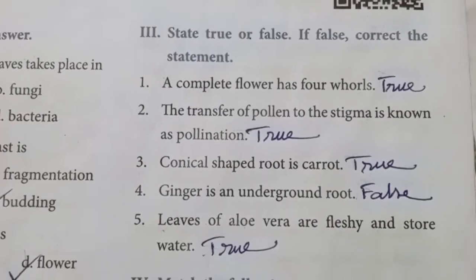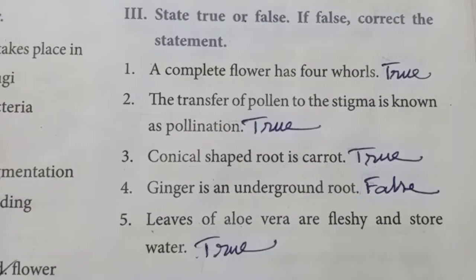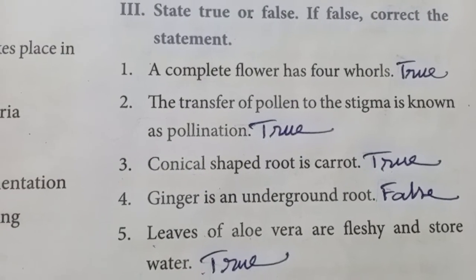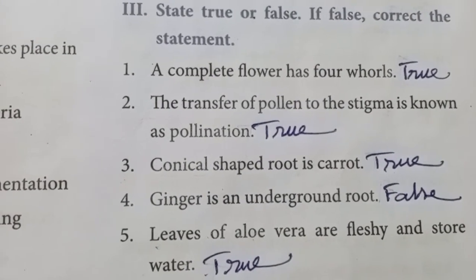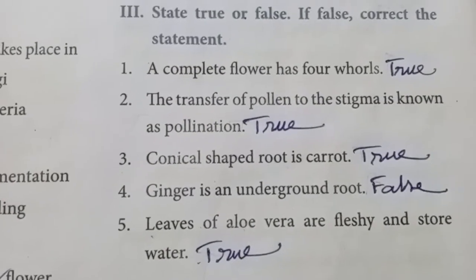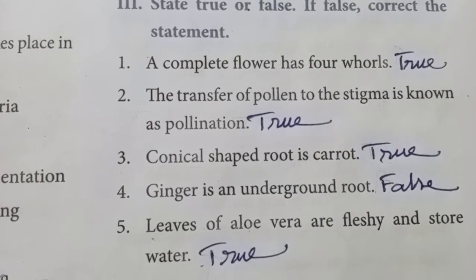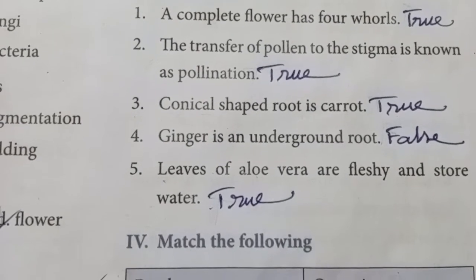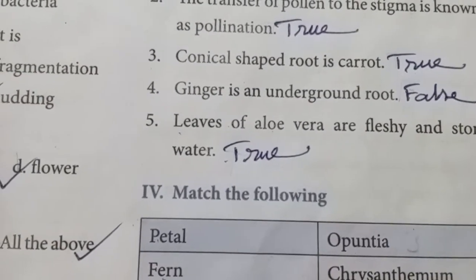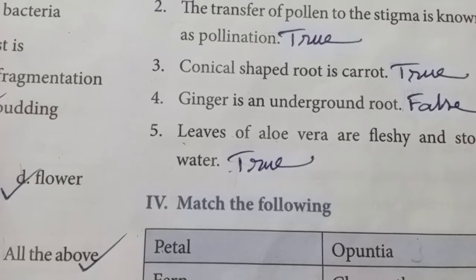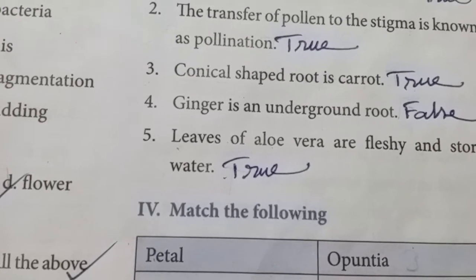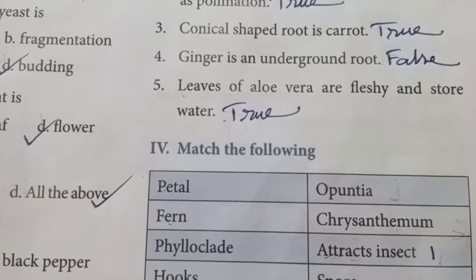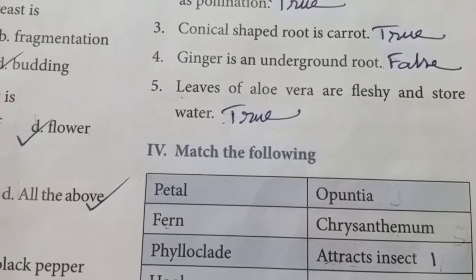True or false section: A complete flower has four whorls — sepal, petal, androecium, and gynoecium. The transfer of pollen to stigma is known as pollination — True. Conical shaped root is a taproot — True. Ginger is an underground root — False; ginger is an underground stem. Leaves of aloe vera are fleshy and store water — True.